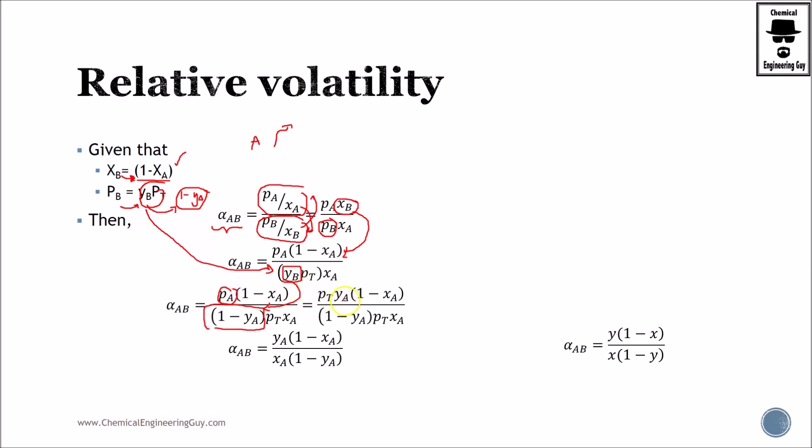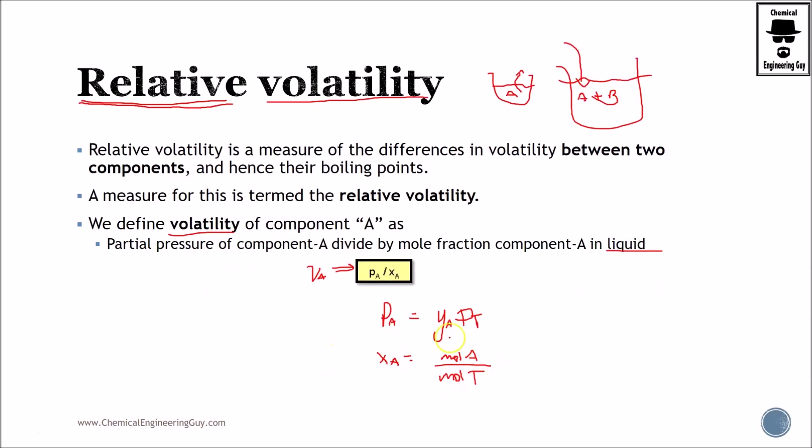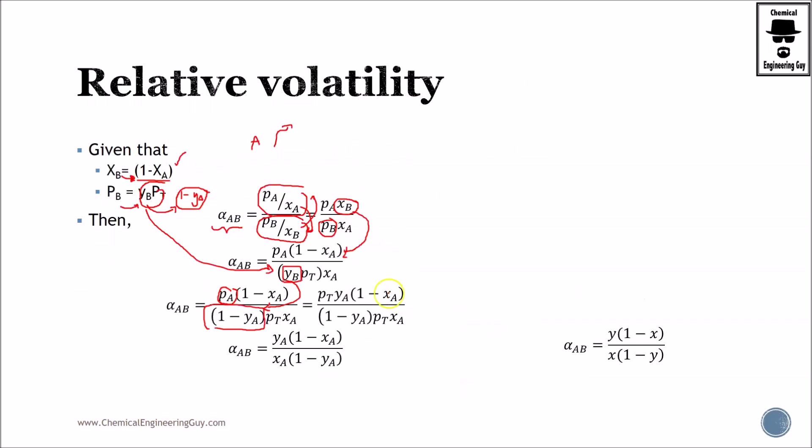Remember the partial pressure of A can be given as the molar fraction of A times pT. Let's substitute that as well. We now have pT xA yA and pT, so this divides this one and we remain with yA times 1 minus xA divided by xA times 1 minus yA, which is right here.